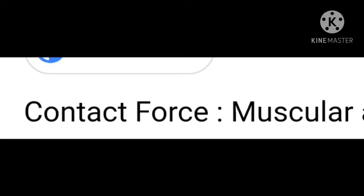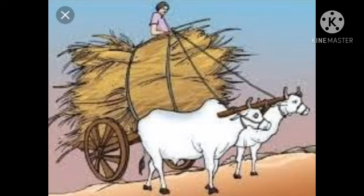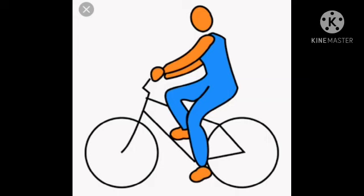Forces that act on an object by direct or indirect physical contact are called contact forces. Contact forces are of two types: applied force, also known as muscular force, and friction. The force resulting from the action of muscles is known as muscular force. Since muscular force can be applied only when in contact with an object, it is a contact force. Animals use muscular force to carry out their tasks, and when we do physical work like cycling, we use our muscles to move the cycle from one place to another.